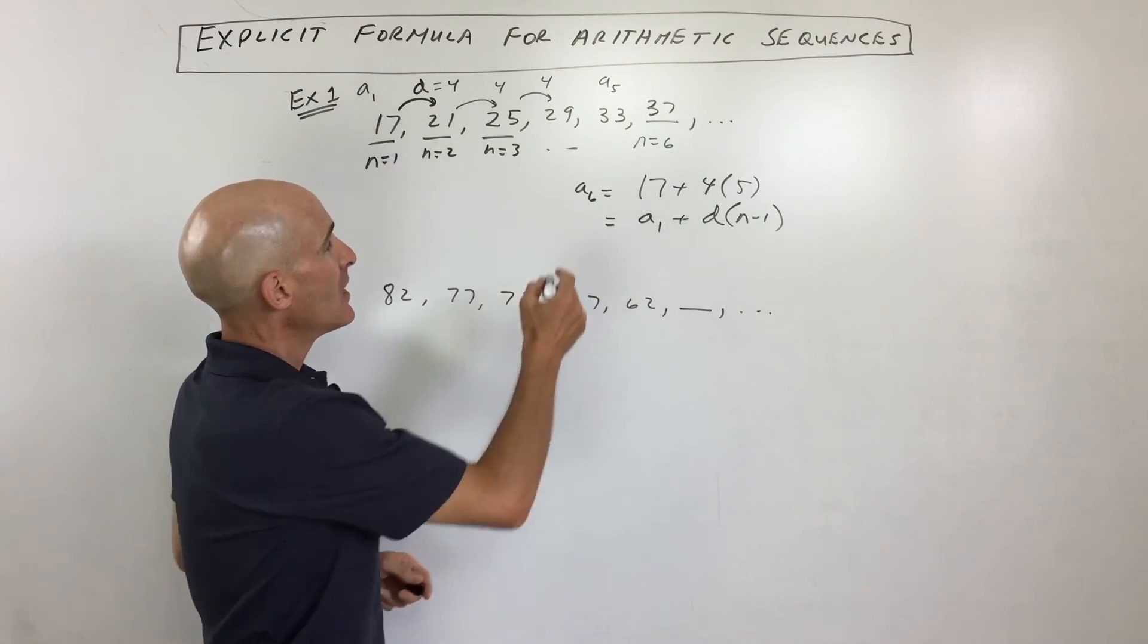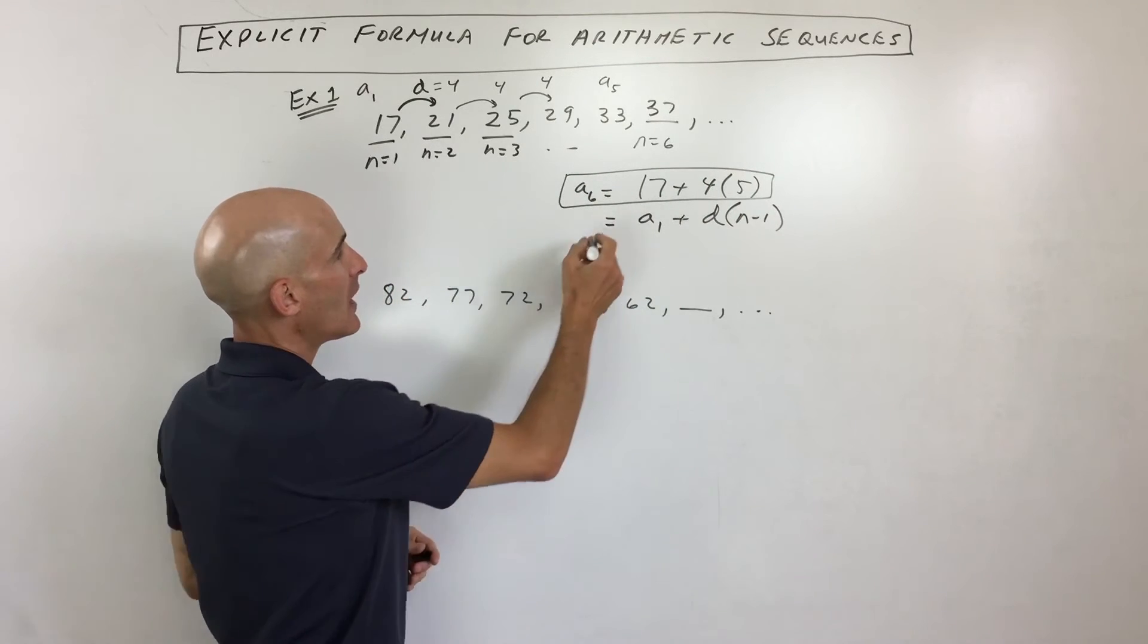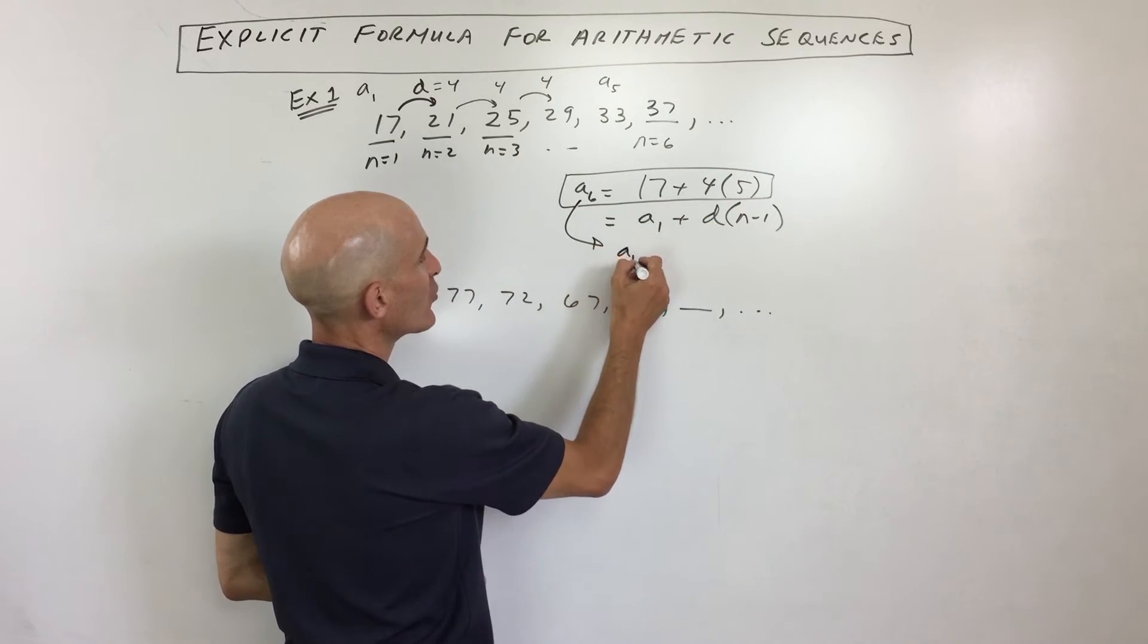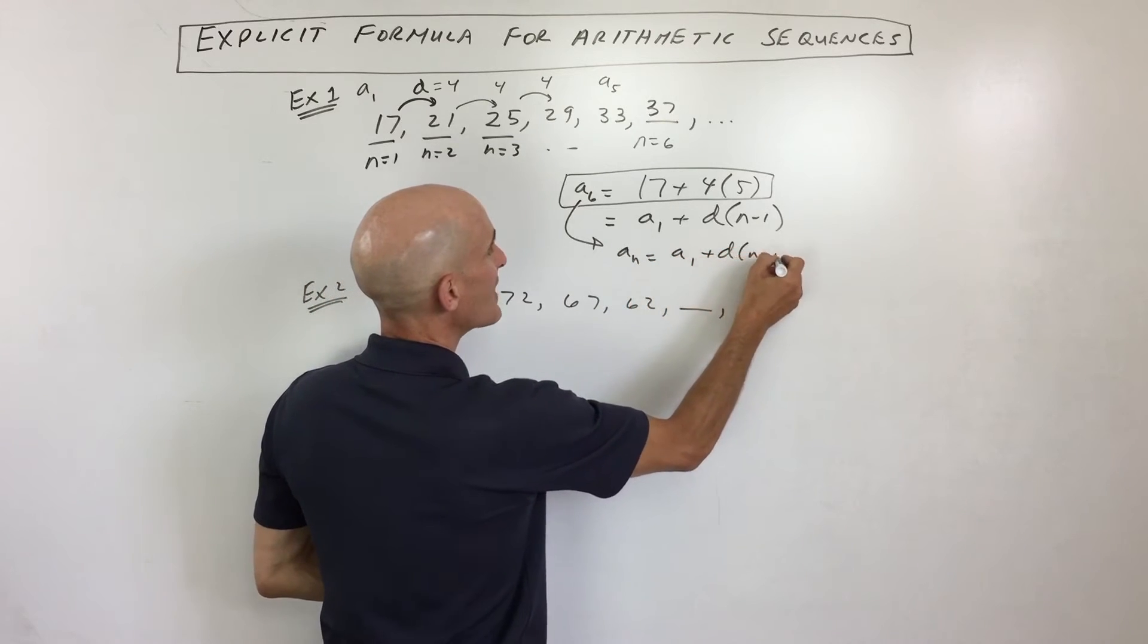So now what we have is we have what they call an explicit formula, meaning that it'll take you right to any particular term. So let's write this in a little bit more general way. a sub n equals a sub 1 plus d times n minus 1.